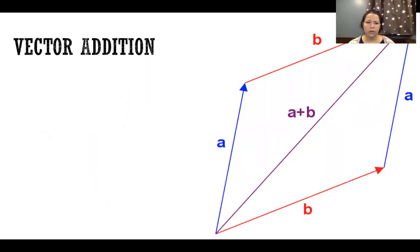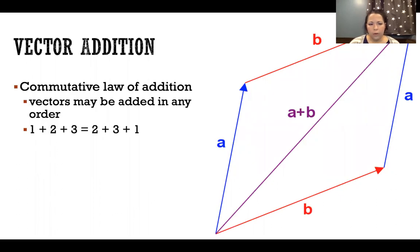Starting with vector addition. The commutative law of addition applies to vectors, which means that vectors can be added in any order just like is true of normal addition. For example, 1 + 2 + 3 is the same thing as 2 + 3 + 1. The same thing applies to vectors.